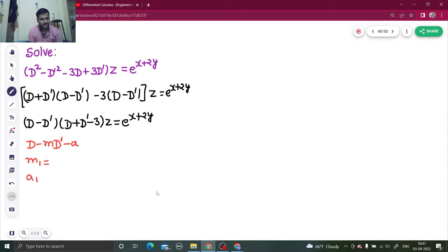So my m1 is 1. My a1 is 0. What about m2? That is minus 1. And you are getting your a2 as 3.